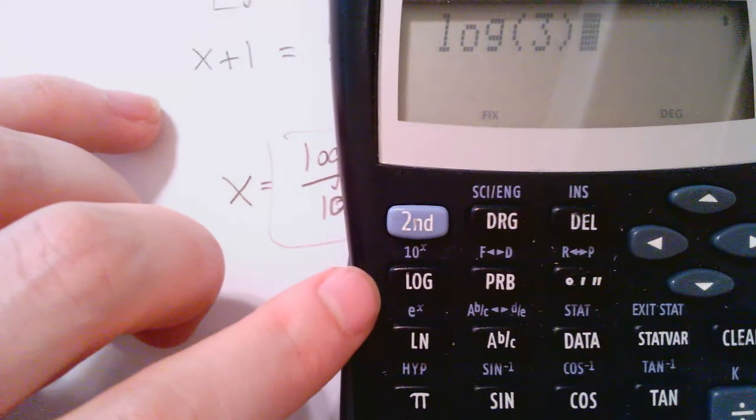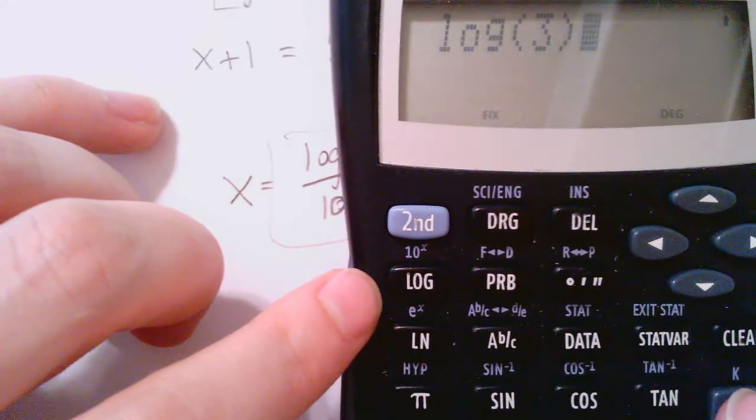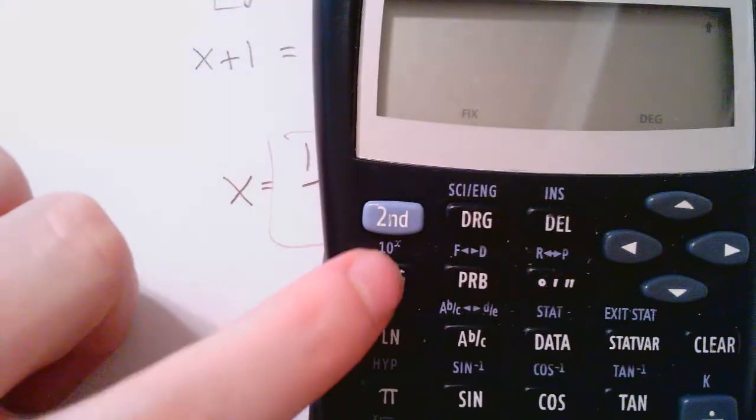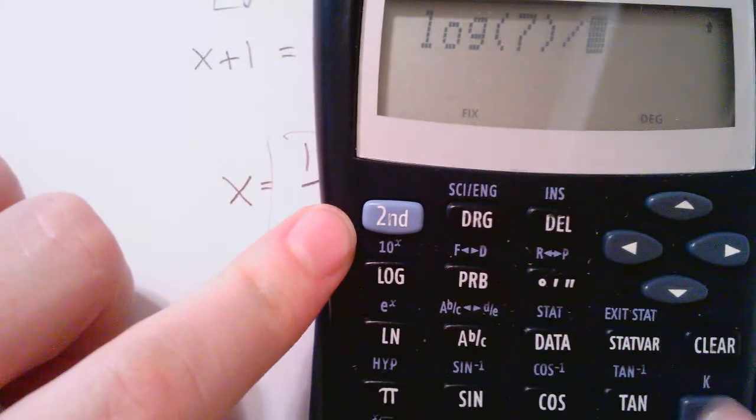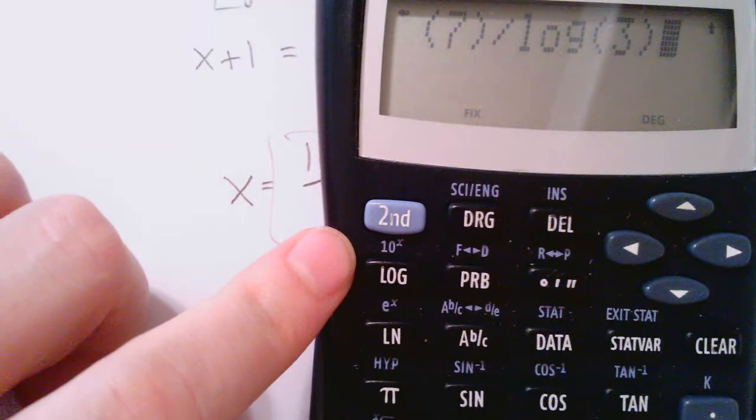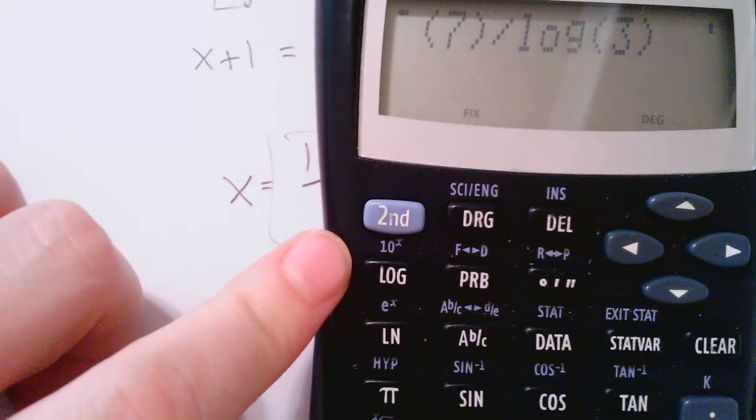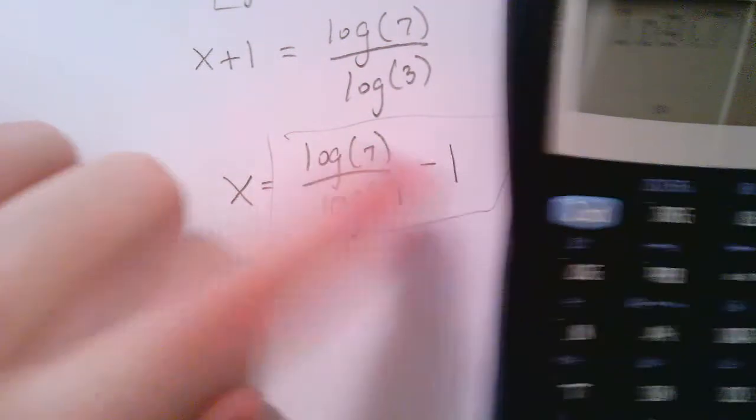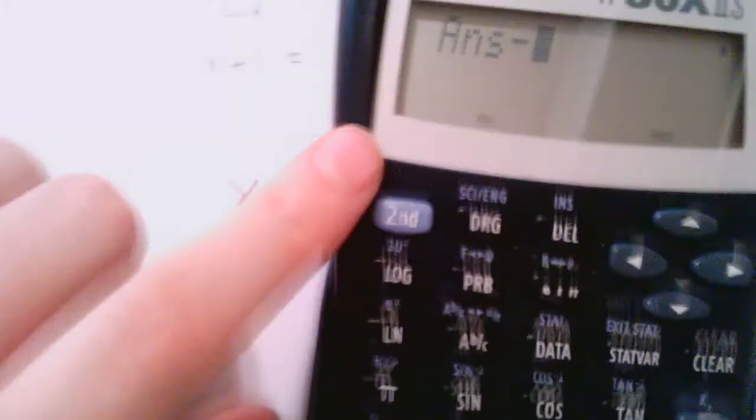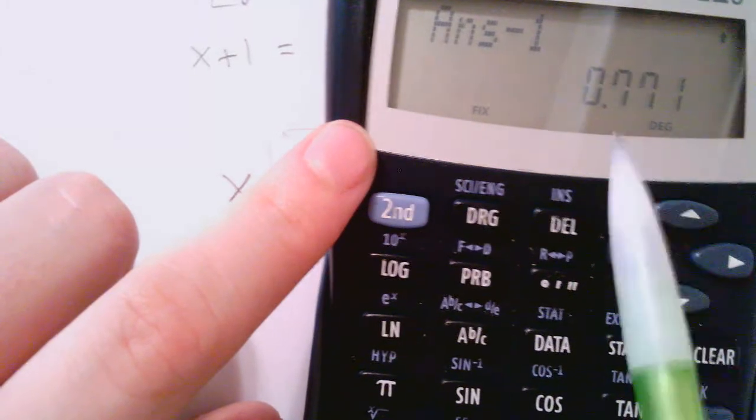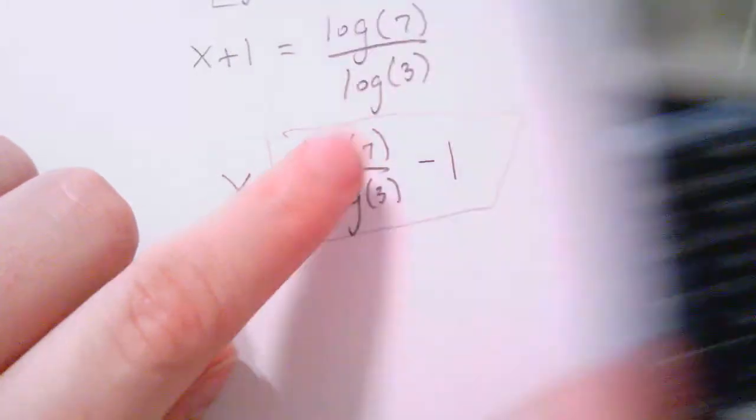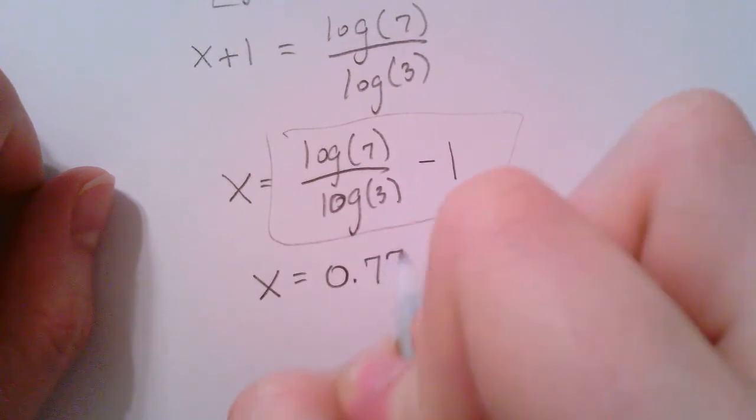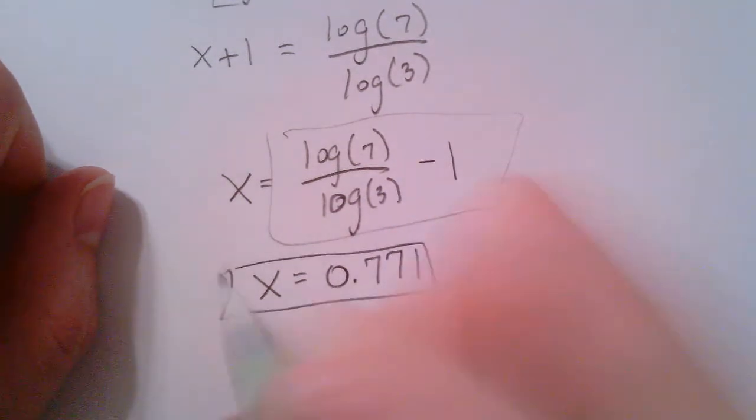Let's take log of seven, close parentheses, and divide by log of three. At this point, I always hit equals. So I basically have done this part, and now I'm going to subtract one. When I say minus one, the answer is 0.771, which is the same as the answer from the video after doing a change of base.